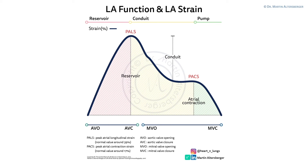Continuing with strain imaging, we can also evaluate left atrial strain. To understand this, we need to appreciate the three phases of the left atrium: the reservoir function, the conduit function, and the pump function. The cardiac cycle is displayed at the bottom of the image, showing the aortic valve opening (AVO), aortic valve closure (AVC), mitral valve opening, and mitral valve closure. There are two key measurements: PALS — peak atrial longitudinal strain — with a normal value around 39%, which is a positive value, and PACS with a normal value of 17%.